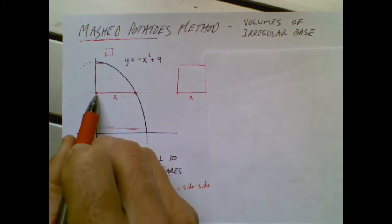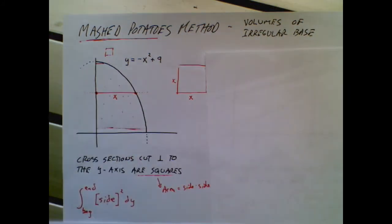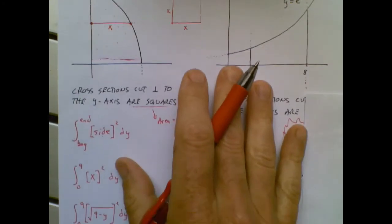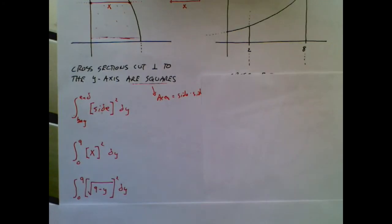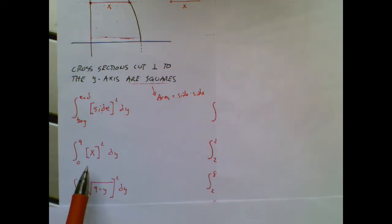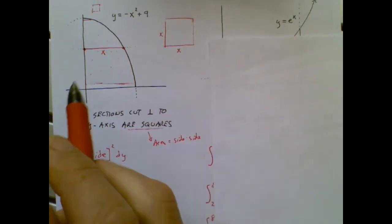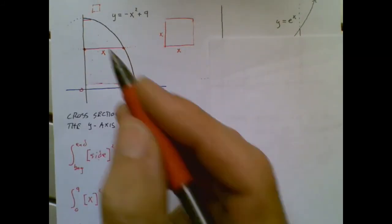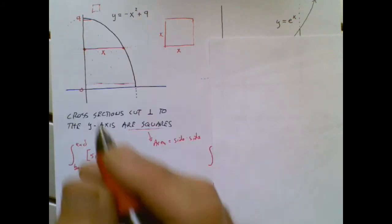And since this is a square, that has to be an x. So beginning slice, ending slice. That happens because my first slice is down here at y equals 0. My last slice is up here at y equals 9.